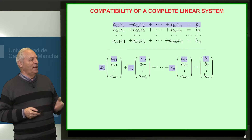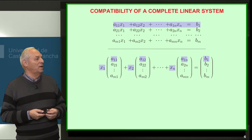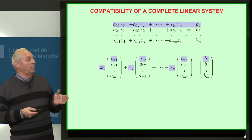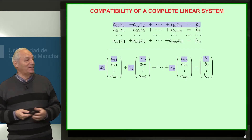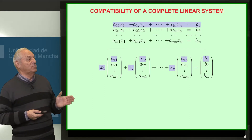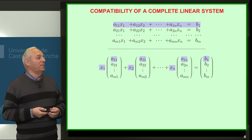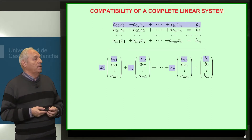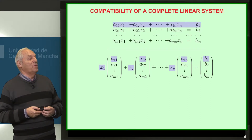Look at the bottom: x1 multiplies a vector (a1-1, a2-1, am1), x2 multiplies another vector, and xn multiplies another vector. The linear combination of those vectors, with coefficients x1, x2, xn, is equal to the vector (b1, b2, bm). We will see that this form is equivalent to the previous one.